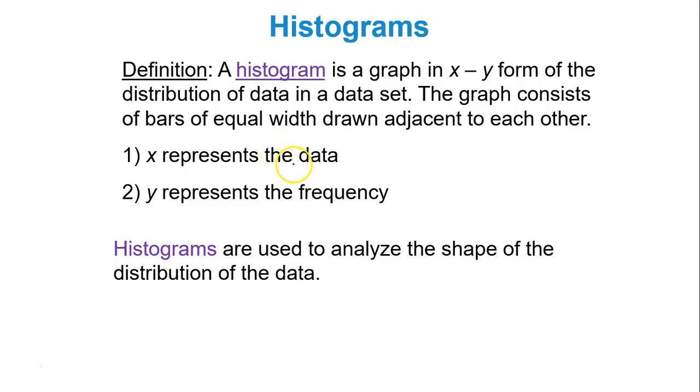Basically, we're going to take frequency tables or frequency distributions and create histograms from them. The graph consists of bars of equal width drawn adjacent to each other, kind of like a bar graph except the bars are next to each other. The bars represent frequency of various categories. In this case, the categories are numeric. The x-axis will represent your data and the y-axis will represent the frequency. Histograms are used to analyze the shape of the distribution of data.